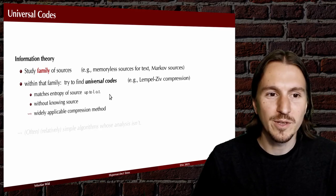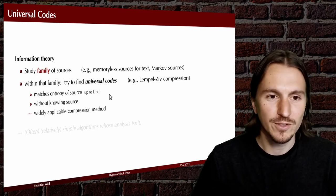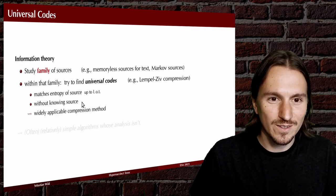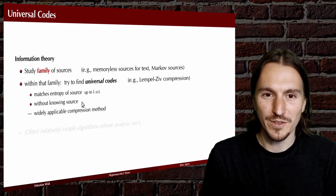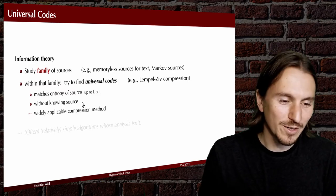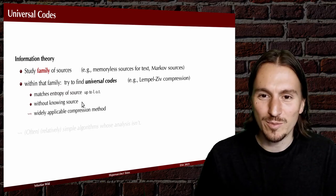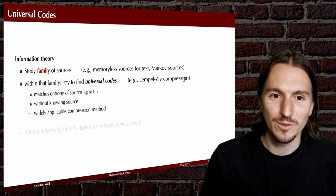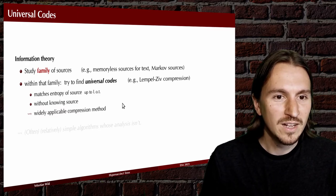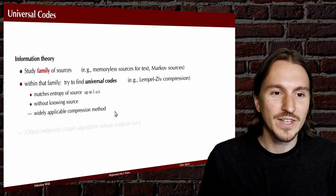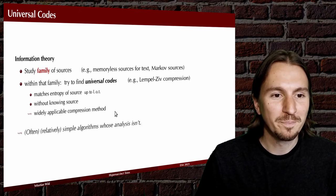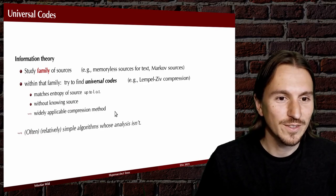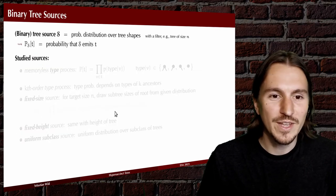What does it mean to be a universal code? It means it matches the entropy of the source up to lower-order terms to store a random object, and 'universal' means the code does not need to know what the random source looks like — for example, in the Markov case, what the transition probabilities are. This universality means the compression technique is widely applicable. These are often simple algorithms, but their analysis isn't necessarily simple, and we'll see that again for binary trees.